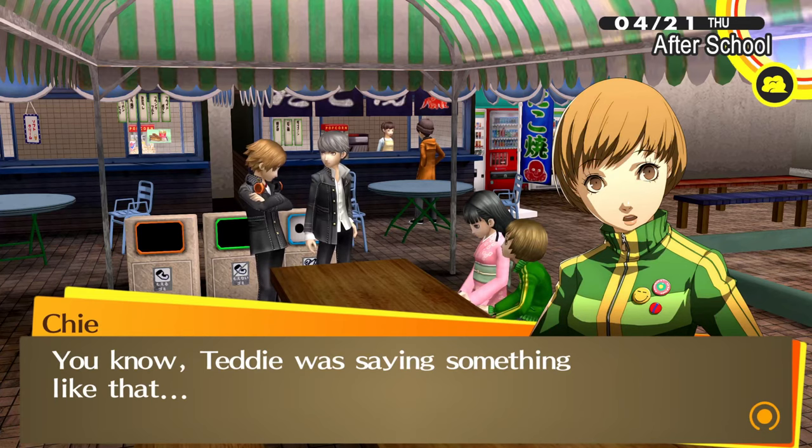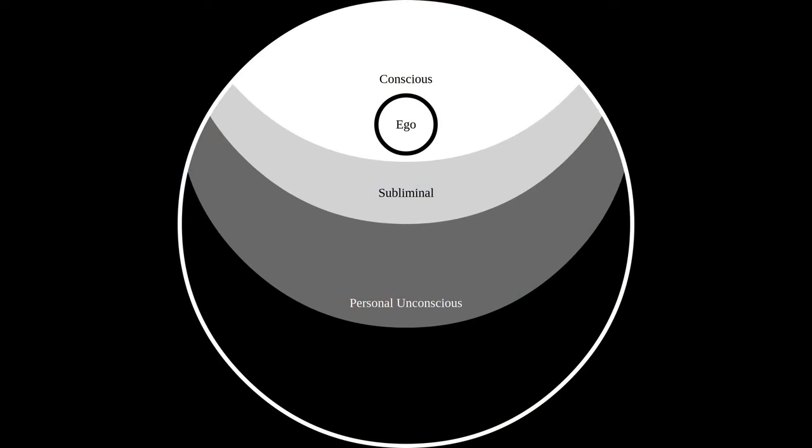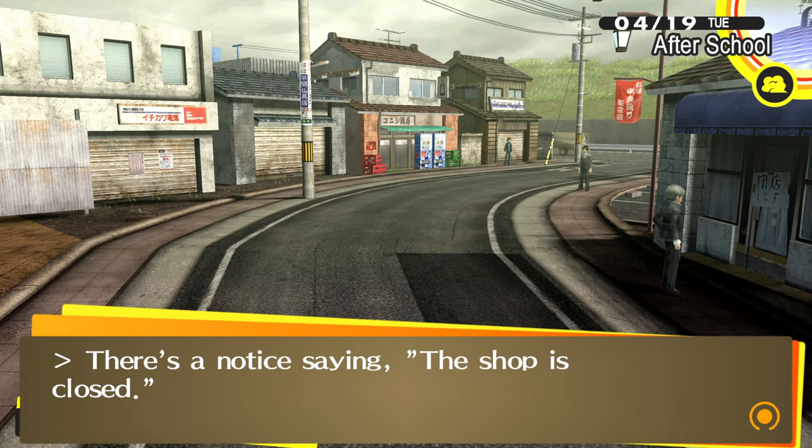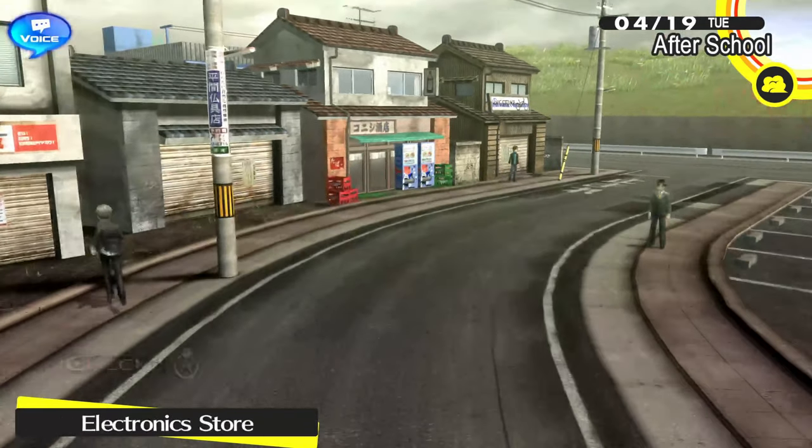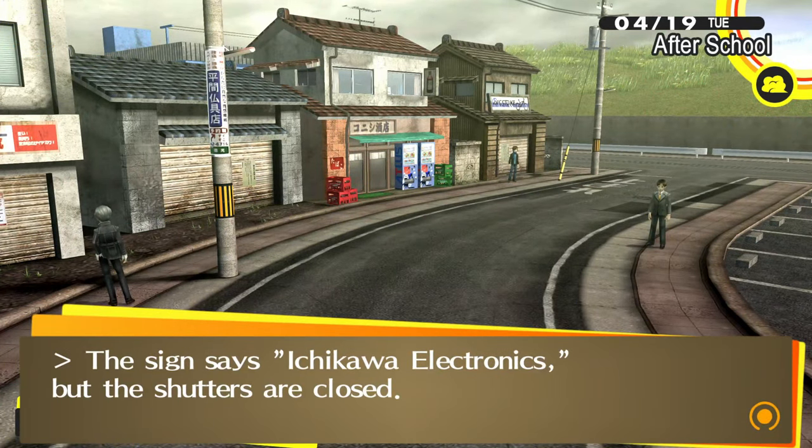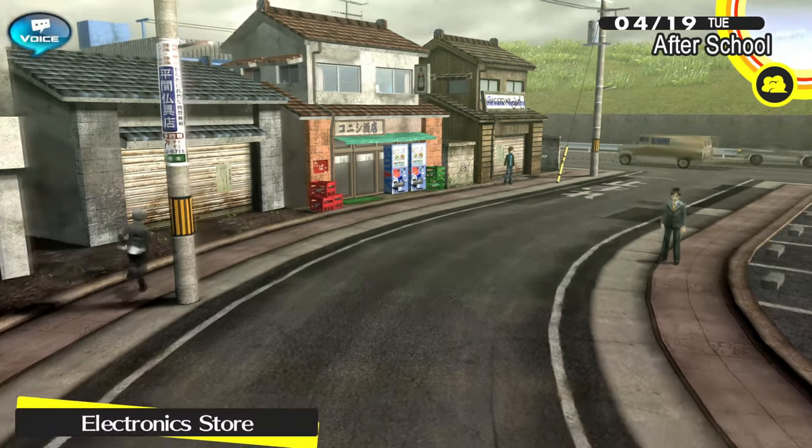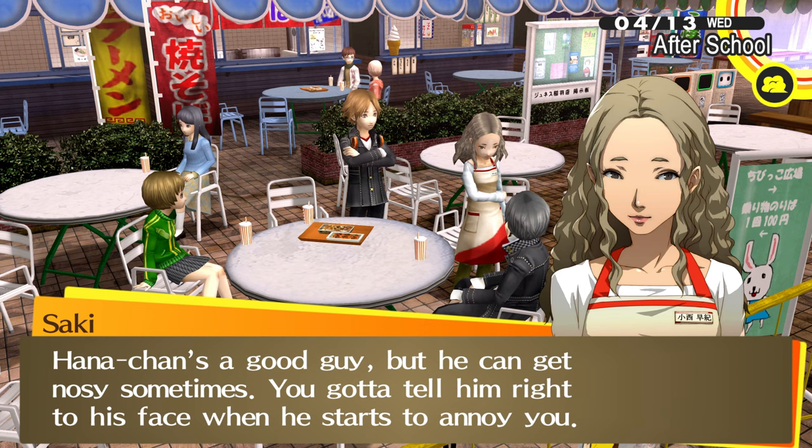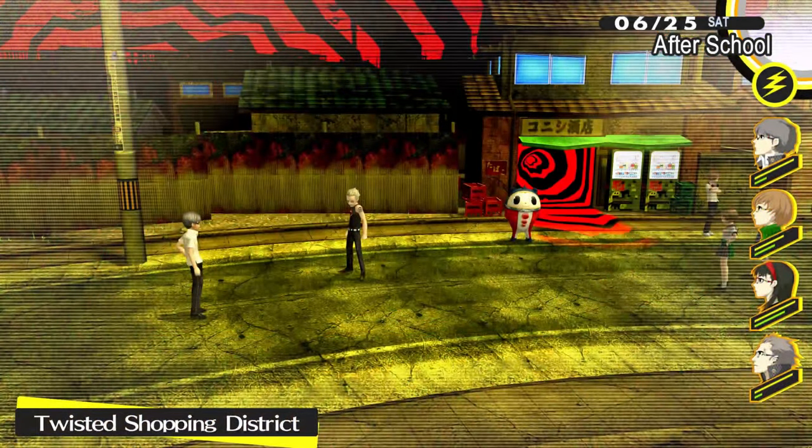Persona 4's TV world creates dungeons based on the personal unconscious of people who fall into it. Let's look at a few of those for examples of what we might repress and why. Saki Konishi's dungeon shows us a version of the shopping district in Inaba. We know since Juness opened a store in the town, many of the local businesses have been forced to close, and Saki's own family business is struggling. Because there is nowhere else to work, when Saki decides to take a job, it has to be at Juness. And at her job, she seems to be a happy and sociable employee. But her dungeon shows us a different story. The version of the shopping district there is darker than the real one. The stores are not just shuttered, but fenced off, and they seem to be covered with blood and vines.